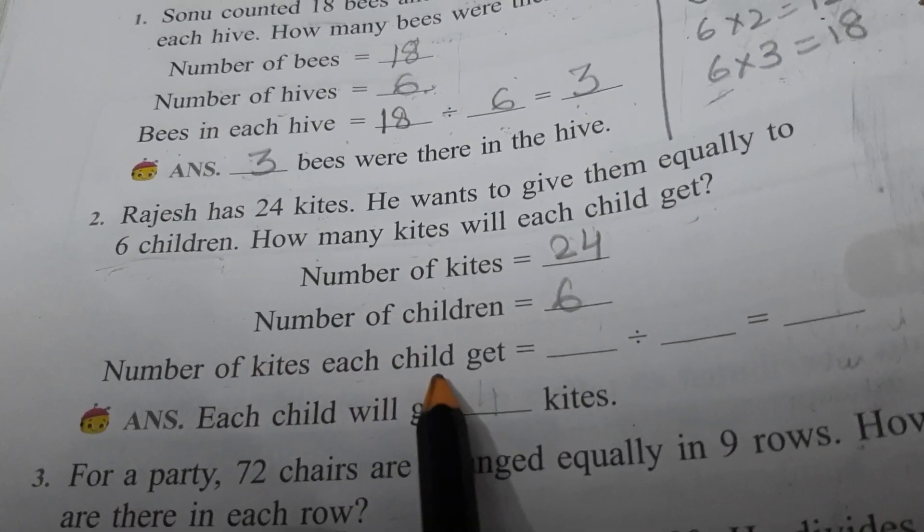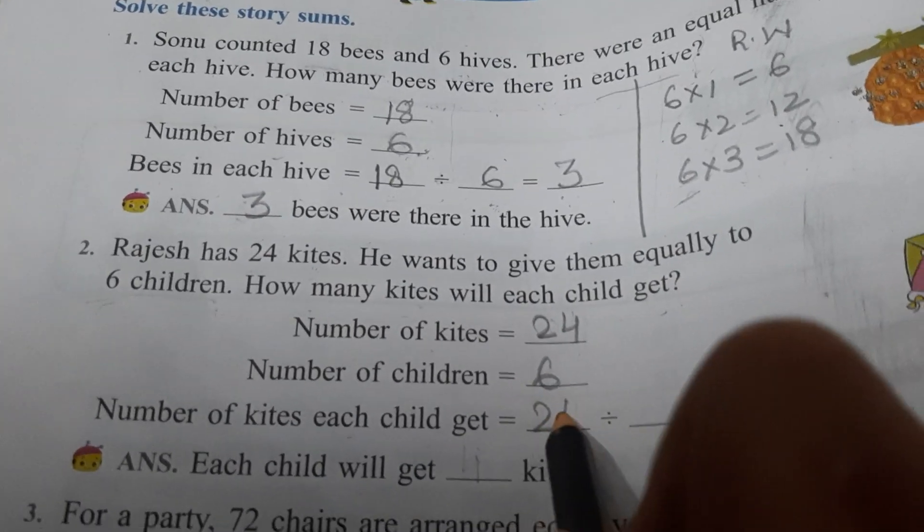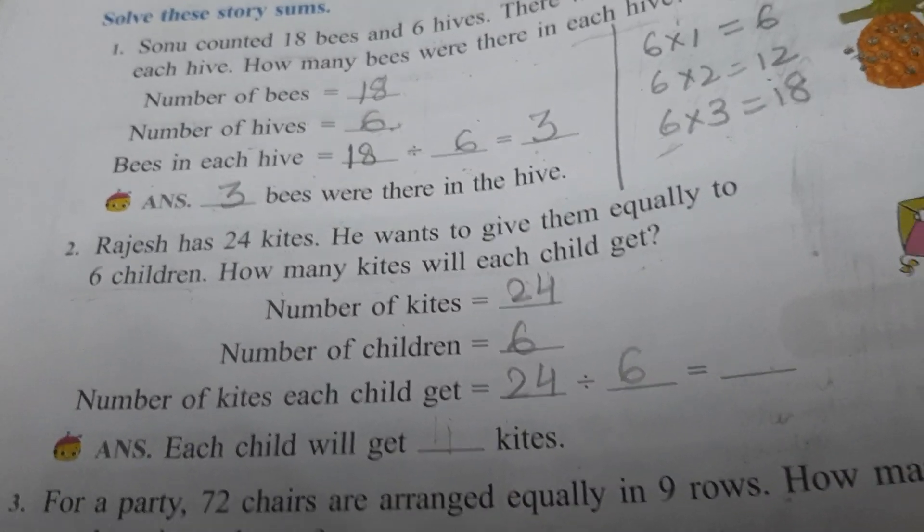What you have to find? Number of kites each child get. So number of kites each child get. So total number of kites divided by number of children.